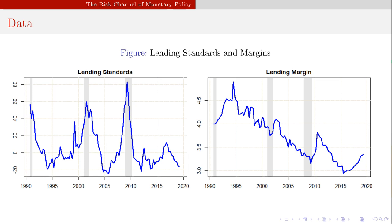Looking at lending standards and lending margins over the full sample period — 1990 to Q4 2018, covering pre and post financial crisis — in shaded areas representing U.S. recessions there are spikes in lending standards. Lending margins are following a downward trend, so lending margins are compressing over time. What we can gather is: whenever there's a recession, banks are stricter about who they lend to; and as stated in prior theory papers, banks experience increased competition for liquidity and customers, with liquidity injections further compressing their lending margins.